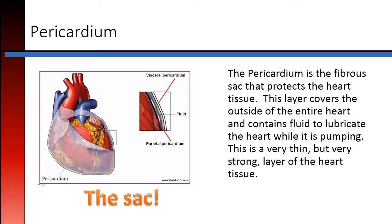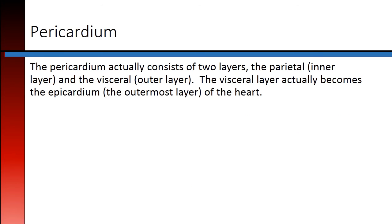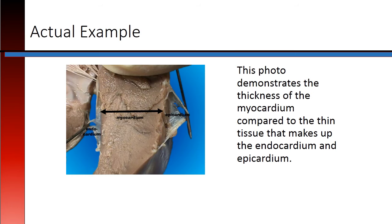The pericardium is the fibrous sac that protects the heart tissue. This layer covers the outside of the entire heart and contains fluid to lubricate the heart while it's pumping. This is a very thin but very strong layer of heart tissue. The pericardium actually consists of two layers: the parietal, or inner layer, and the visceral, or outer layer. The visceral layer actually becomes the epicardium, or outermost layer of the heart.